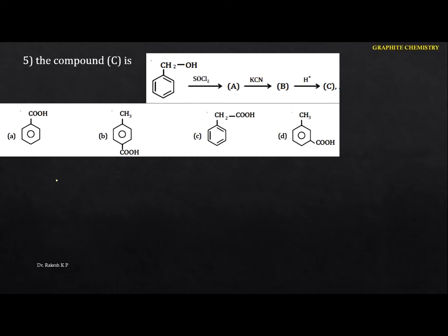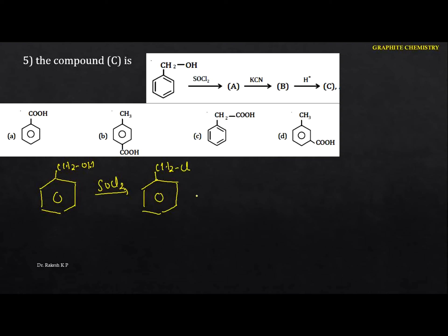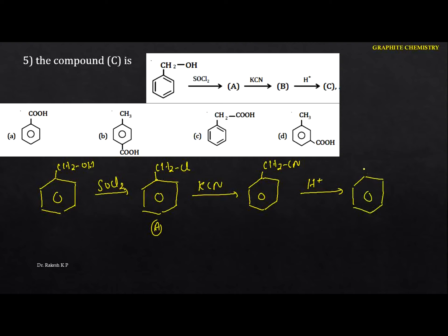Next: identify compound C in the sequence. Benzyl alcohol (−CH2−OH) reacts with thionyl chloride; the OH is replaced by Cl, giving benzyl chloride. Benzyl chloride reacts with potassium cyanide via nucleophilic substitution, giving benzyl cyanide. On hydrolysis with acid, the nitrile group undergoes complete hydrolysis to give phenylacetic acid (carboxylic acid). The option is C.